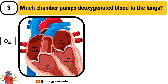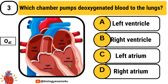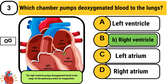Question number 3: Which chamber pumps deoxygenated blood to the lungs? Option A: left ventricle. Option B: right ventricle. Option C: left atrium. Option D: right atrium. The answer is right ventricle. The right ventricle pumps deoxygenated blood to the lungs through the pulmonary artery for oxygenation.